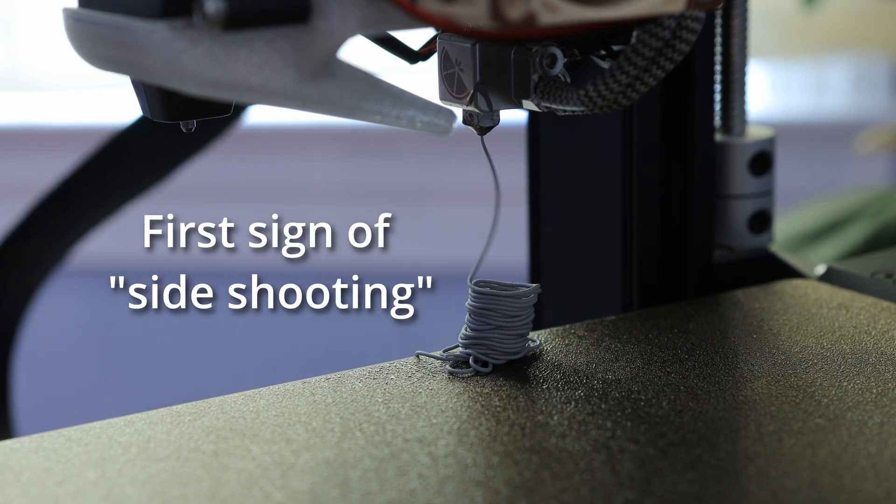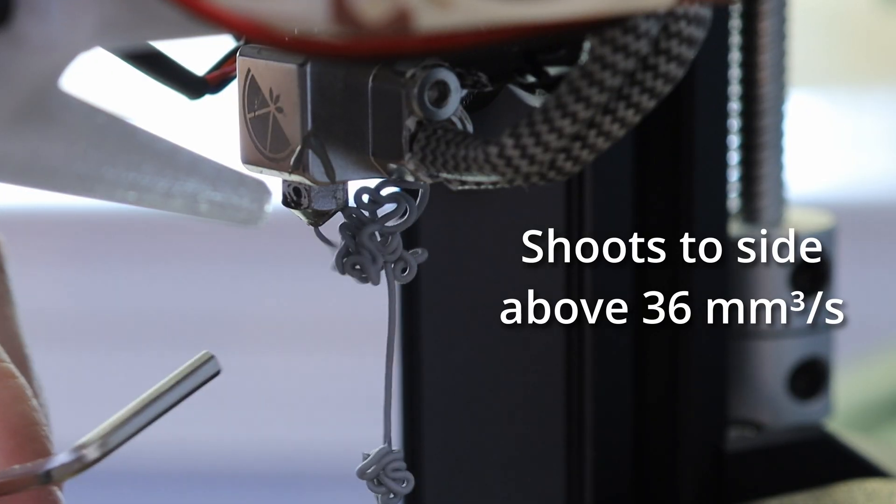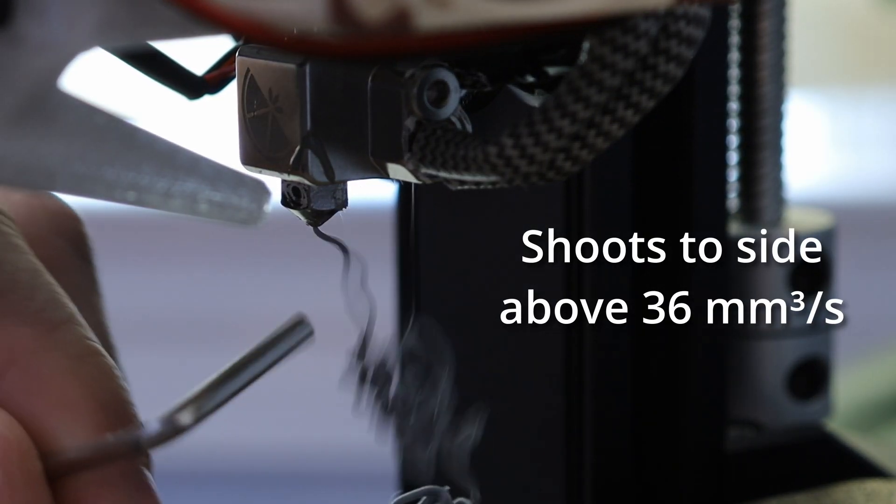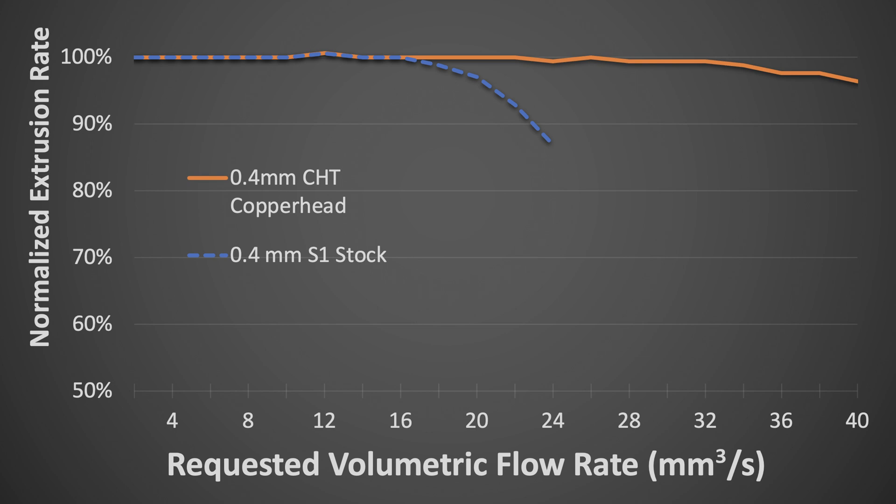This is 32 cubic millimeters per second. This is getting weird. It's like curling back up as it's coming out of the nozzle. As we can see by the extrusion test results, this new hotend is much faster. I'd be comfortable printing up to 30 cubic millimeters per second, or roughly double the speed of the stock setup.